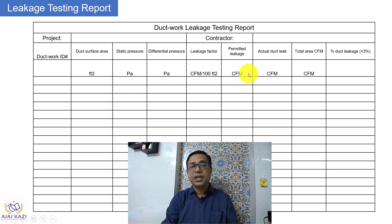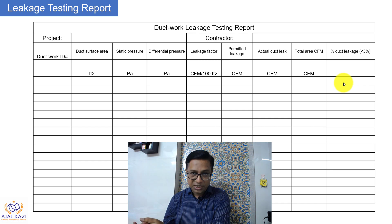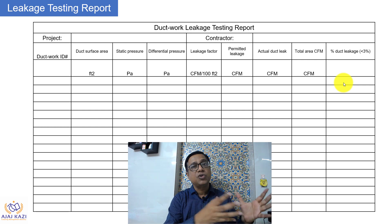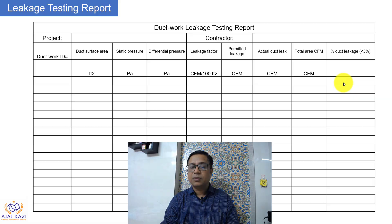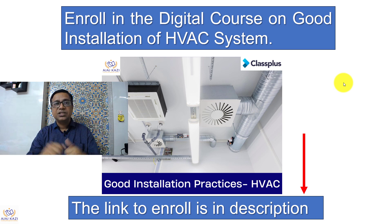Maximum leakage is calculated by the following formula. F is the maximum leakage — the leakage CFM per 100 square feet. CL is the leakage class for 100 square feet. P is the pressure in inches water gauge (H₂O). These are some of the sealing classes — Class C, B, A — and depending upon the pressure, such as 500 Pascal or 1000 Pascal, the leakage class applies.